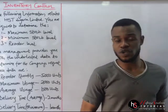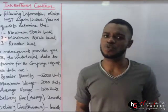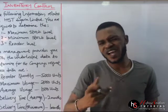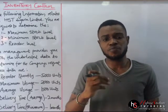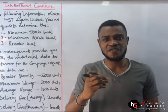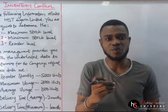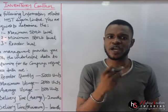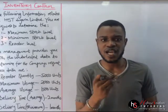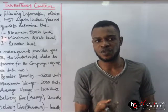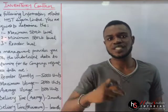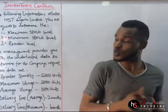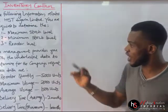Now there is something I forgot to tell us. Under the inventory control, when a value is not given, we make use of the average. We use the formula for average usage, average stock, and average delivery period. We use that to derive the value that is not given from the question.